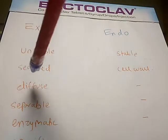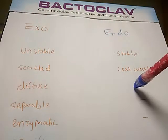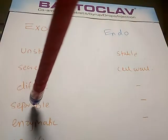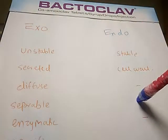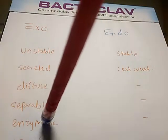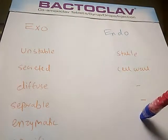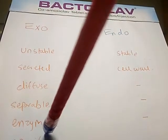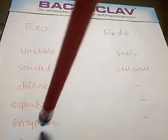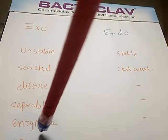Exotoxins can diffuse in the medium of the culture, endotoxins cannot. Exotoxins are readily separable from the culture, endotoxins are not. Exotoxins have enzymatic action, endotoxins don't have enzymatic action. Exotoxins have specific pharmacological effects.